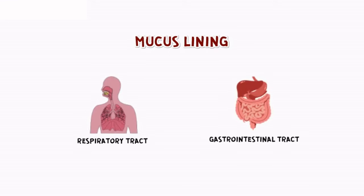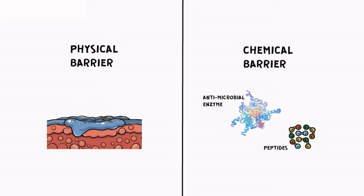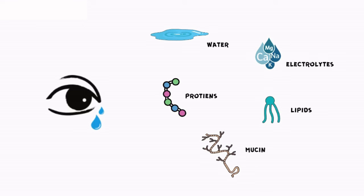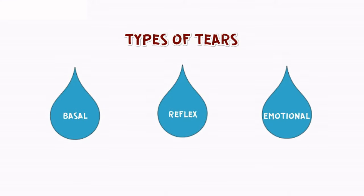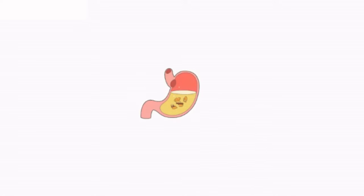Up next is mucous lining. Mucus linings are present in the respiratory and gastrointestinal tracts, which are paths for food and air to travel into the body. Mucus acts as both a physical and a chemical barrier — physical as mucus is sticky and can trap pathogens, and chemical as it has antimicrobial enzymes and peptides that can kill pathogenic cells. Tears, made up of water, electrolytes, proteins, lipids, and mucins, are also part of the first line of defense. Basal tears appear as a constant shield keeping debris, dust, and particles away, with the highest protein and lipid content. HCl has a very acidic pH of 1.5 to 3.5, and most pathogens cannot survive such extreme pH and tend to die.